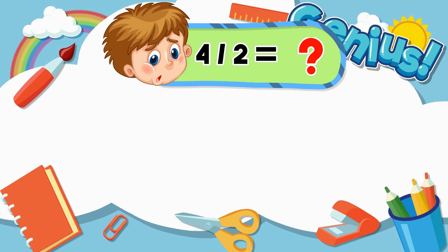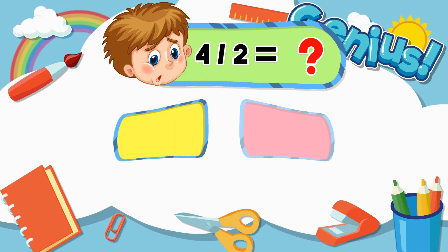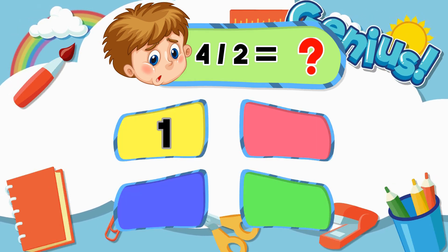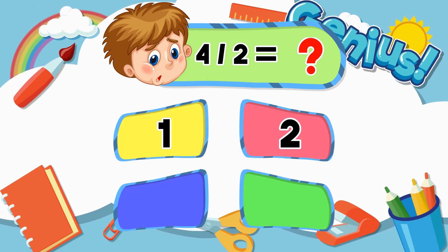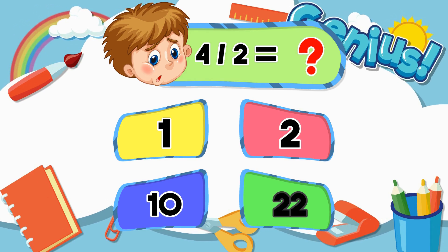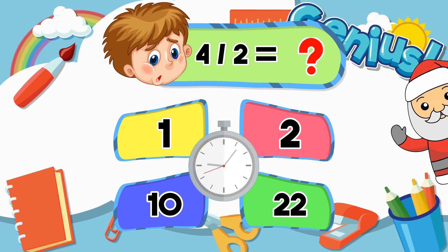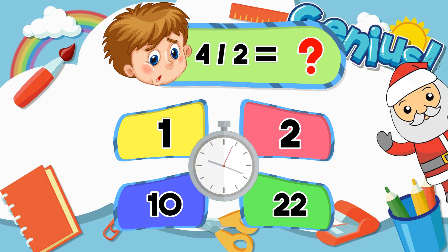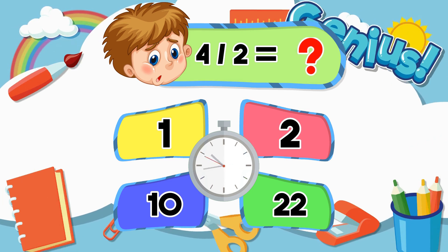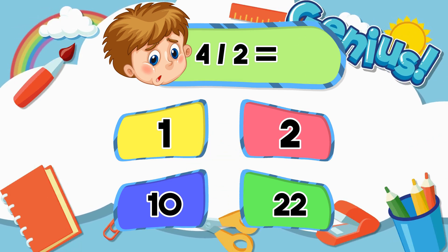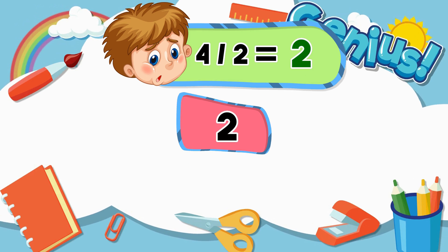What is 4 divided by 2? 1, 2, 10, 22. [Answer:] 2.